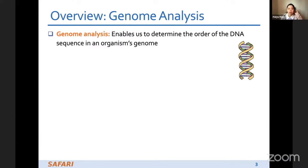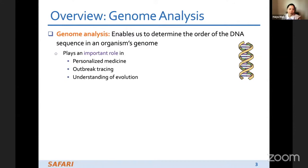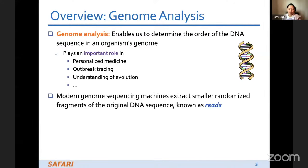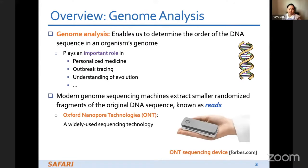Genome analysis enables us to determine the order of the DNA sequence in an organism's genome. It plays an important role in personalized medicine, outbreak tracing, understanding evolution, and so on. Modern genome sequencing machines extract smaller randomized fragments of the original DNA sequence, which are known as reads. In this project we mainly focus on Oxford Nanopore Technologies, known as ONT.